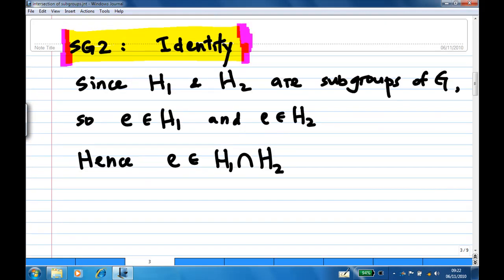Second property, identity. Since H1 and H2 are subgroups of G, so the identity element e belong to H1 and also e belong to H2. Therefore, e belong to the intersection of H1 and H2.